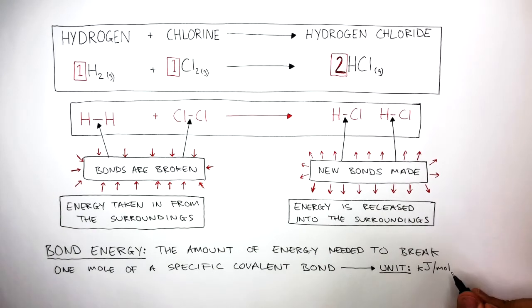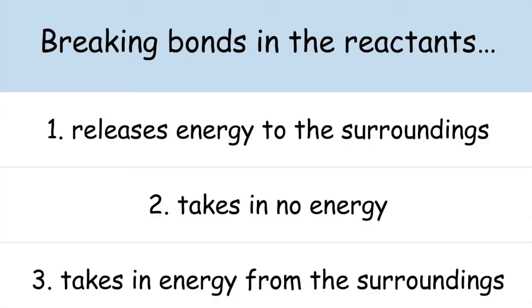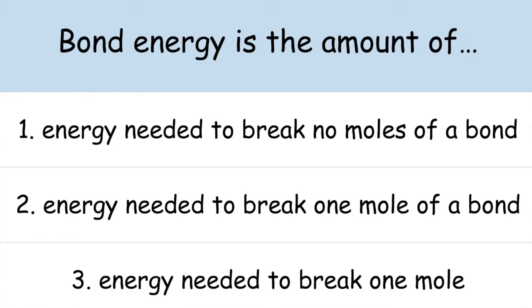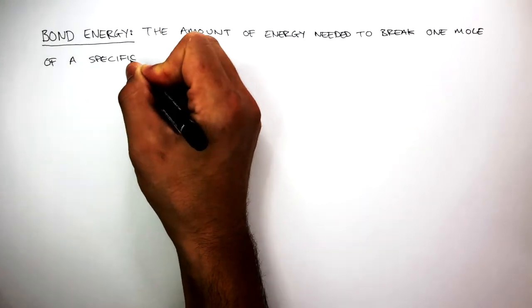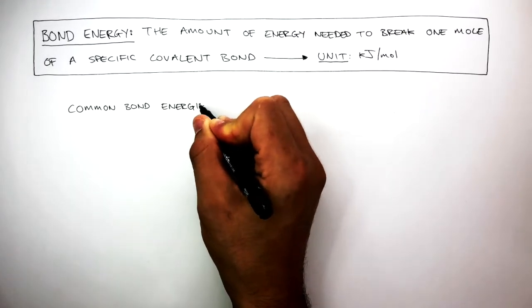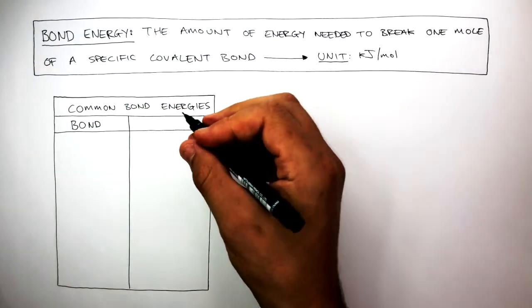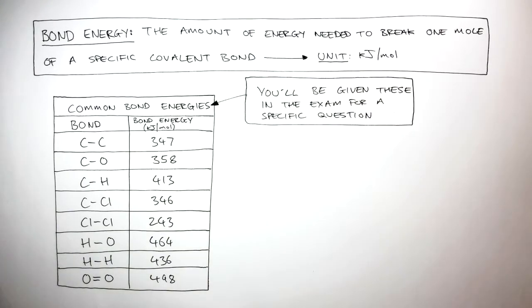The unit is kilojoules per mole. You need to be aware of common bond energies, where different bonds have very specific bond energies in kilojoules per mole. Don't worry — you'll be given these in the exam for a specific question, so you do not need to learn them off by heart. You just need to know how to use them.